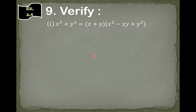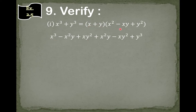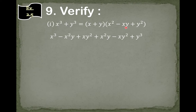We multiply x by x square, so this will be x cube. Then we multiply x by minus x y, so this will be minus x square y. Then we multiply x by plus y square, so this will be plus x y square. Then we multiply plus y by minus x y, so this will be minus x y square. And we multiply plus y by plus y square, so this will be plus y cube.